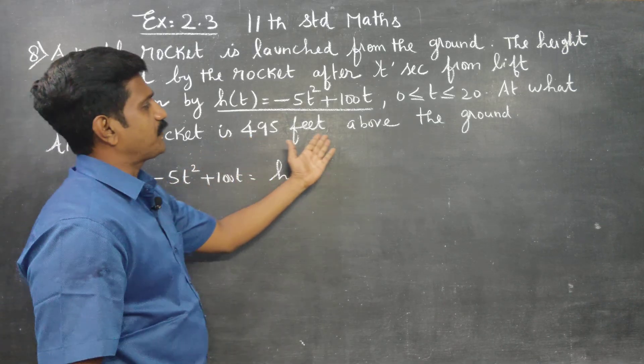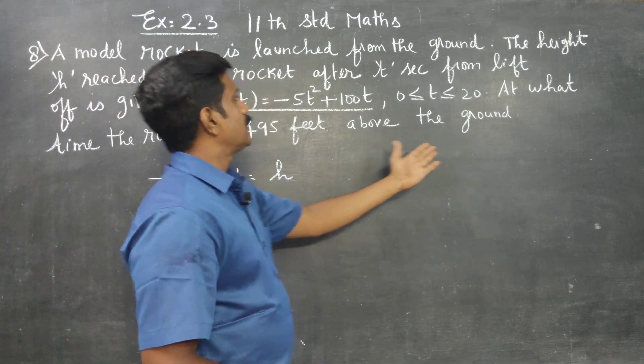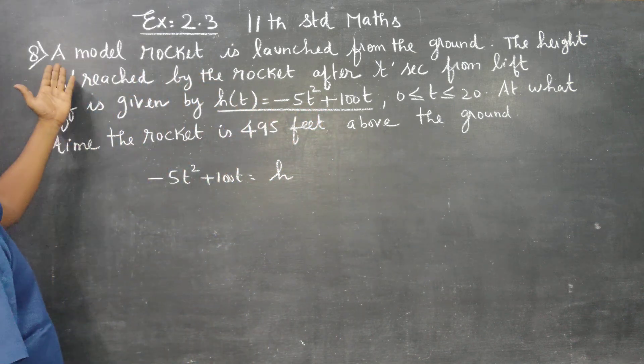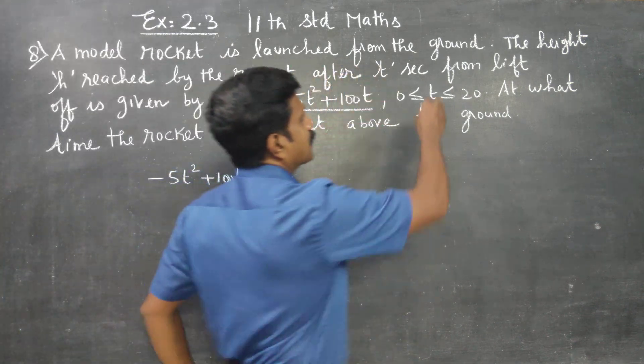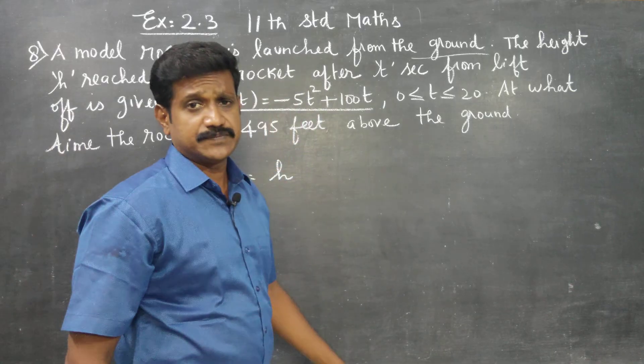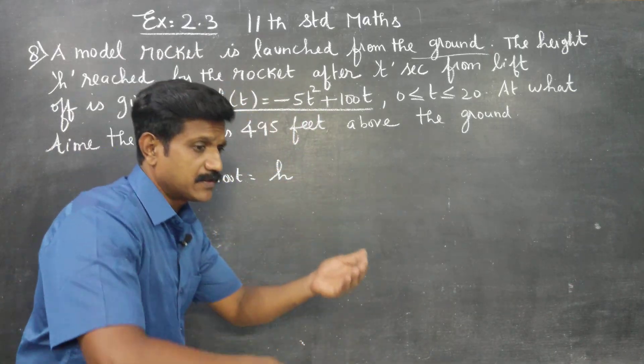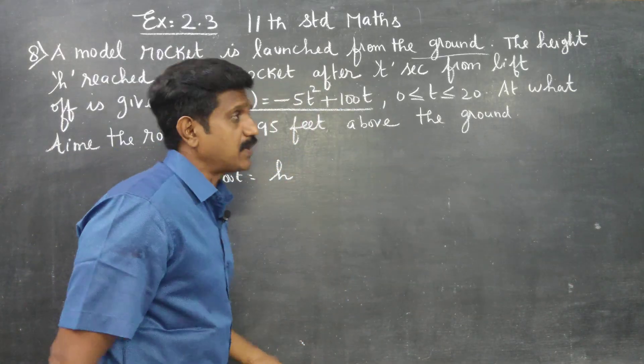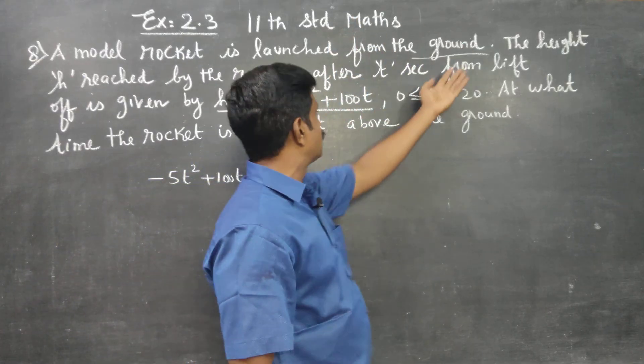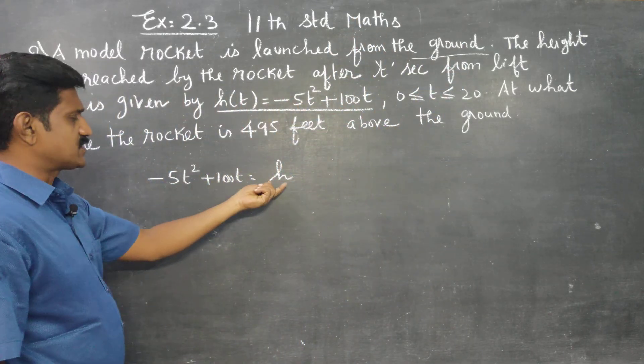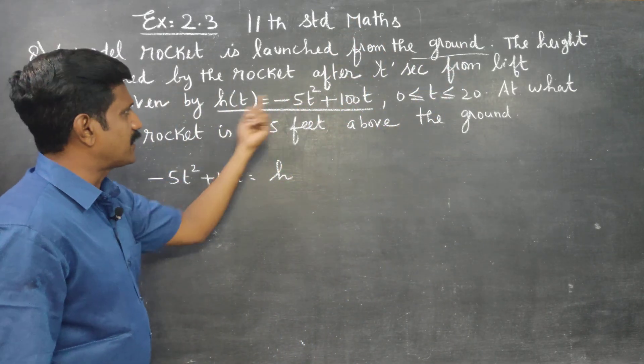The rocket is 495 feet above the ground. This equation is from the ground. A model rocket is launched from the ground. This is the ground equation. Height is h, h(t) is related to t.